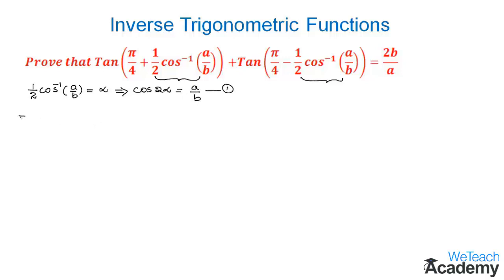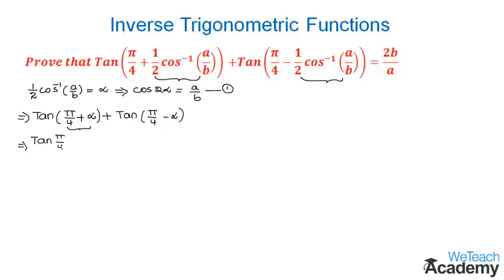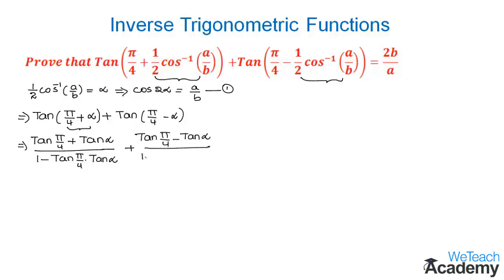Our given example will then become tan(π/4 + α) plus tan(π/4 − α). This is in the form of a compound angle, so we apply the compound angle formula to get tan(π/4) + tan α divided by 1 − tan(π/4)·tan α, plus tan(π/4) − tan α divided by 1 + tan(π/4)·tan α.